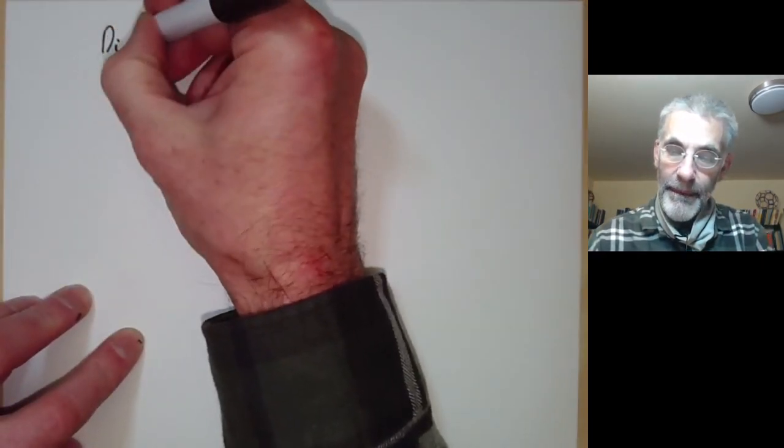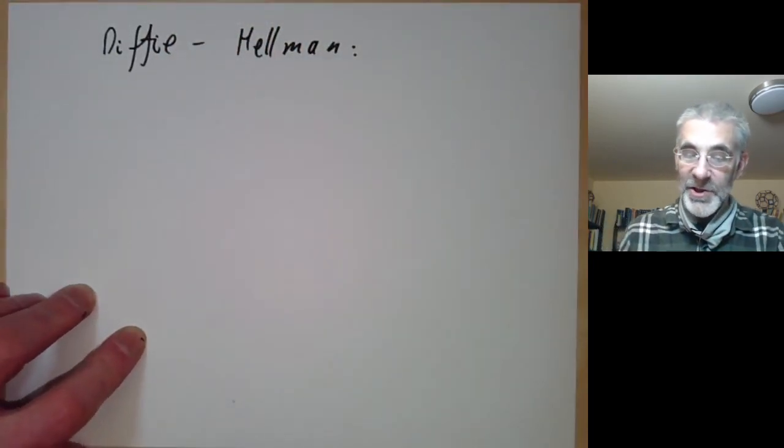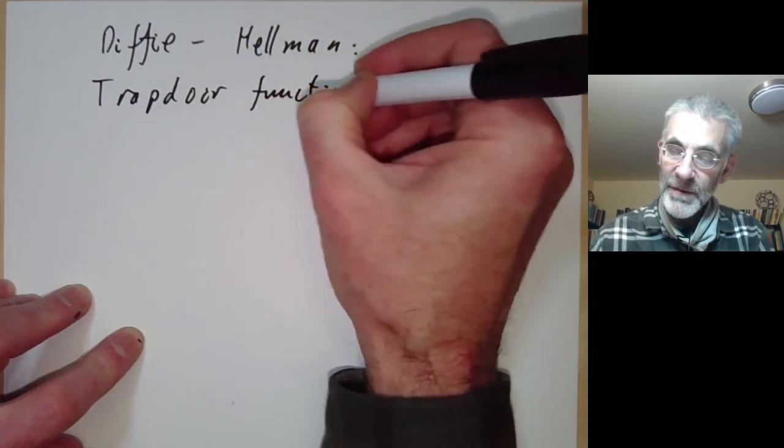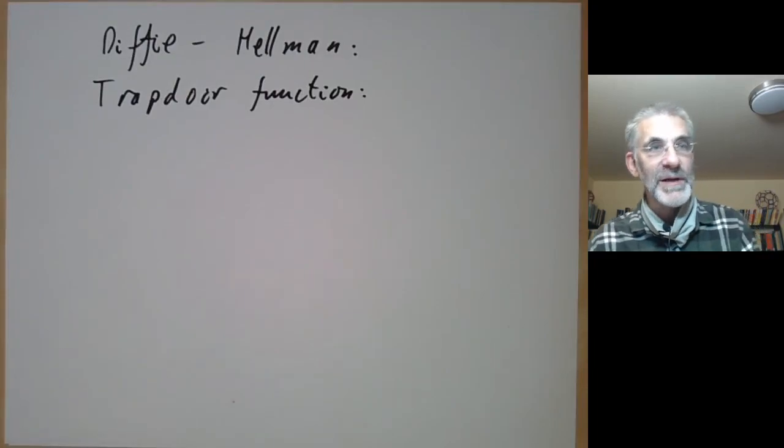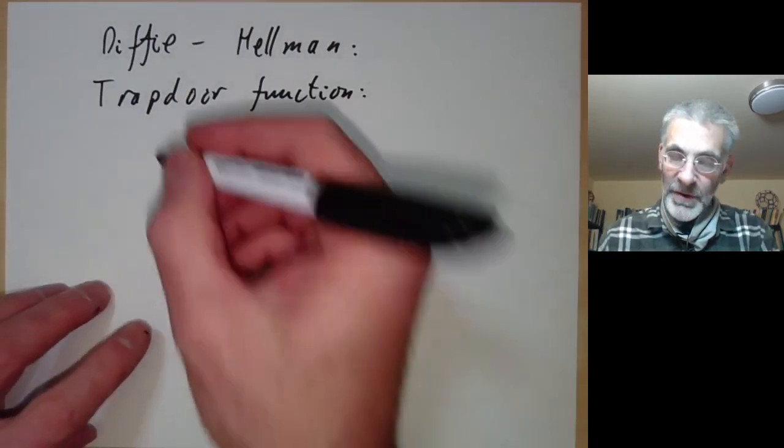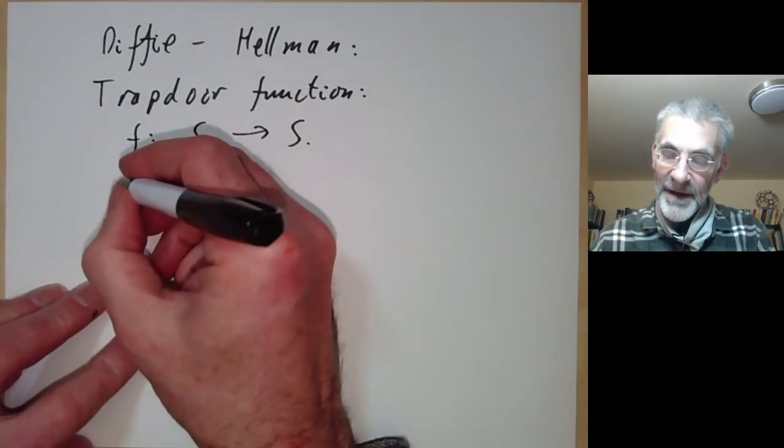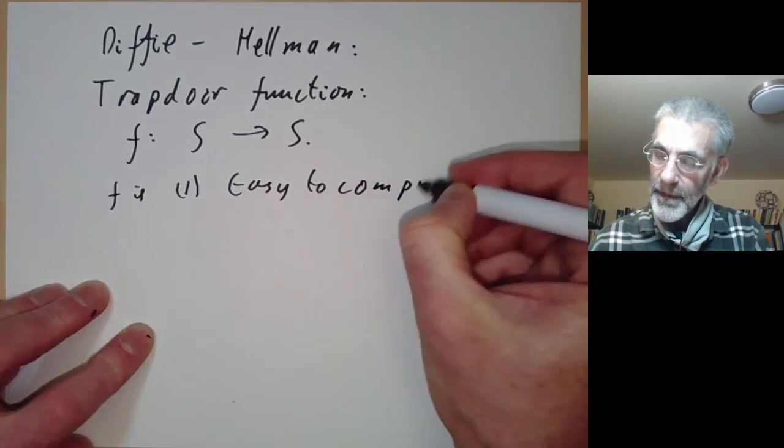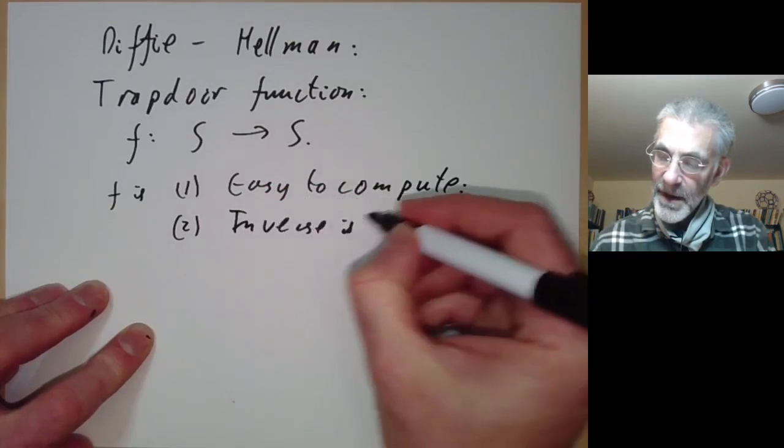A method of doing this was found by Diffie and Hellman, at least assuming the existence of something called a trapdoor function. A trapdoor function is a function f from some set S to itself, where first of all it's easy to compute, and second, the inverse is hard to compute.